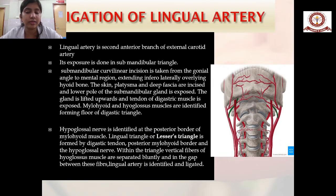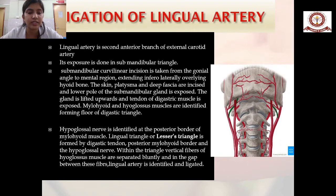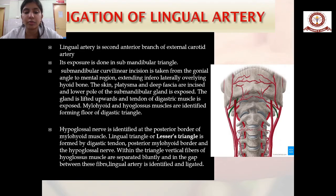The lingual artery is located in the submandibular triangle and approached via a submandibular incision from the gonial angle to the mental region. The skin, platysma, and deep fascia are incised, and the lower pole of the submandibular gland is exposed. The submandibular gland is lifted, the digastric tendon and hyoglossus muscle identified, and the lingual triangle — formed by the digastric tendon, posterior mylohyoid border, and hypoglossal nerve — contains the lingual artery, which is then identified and ligated.